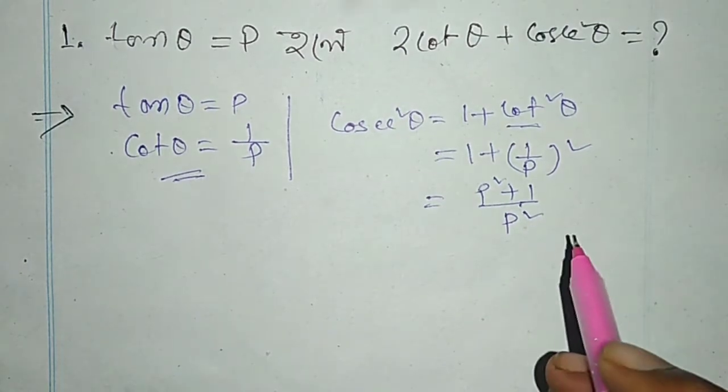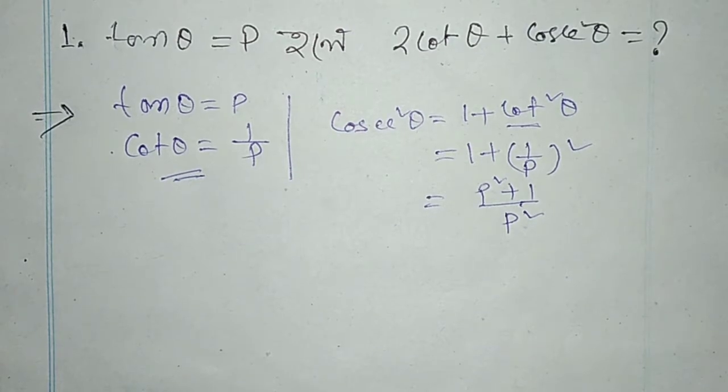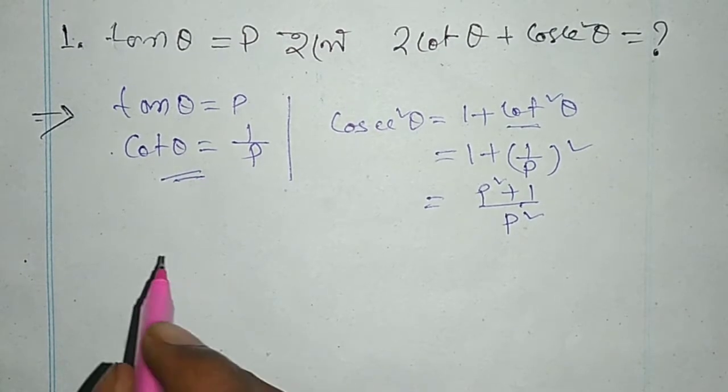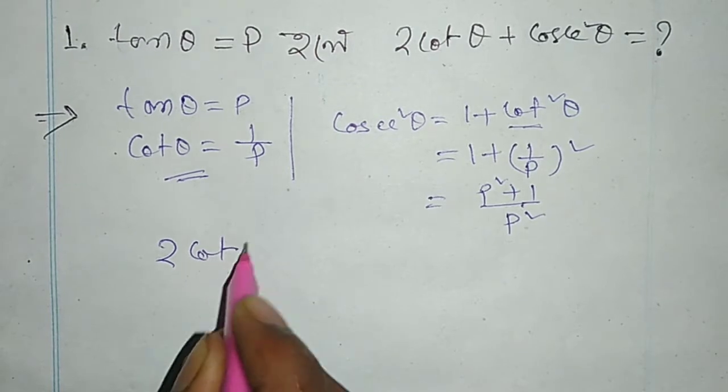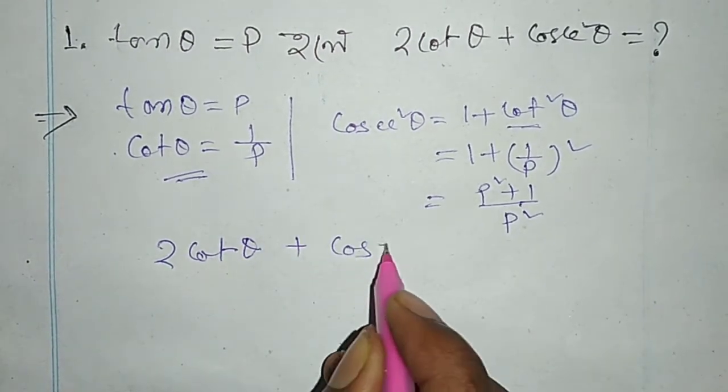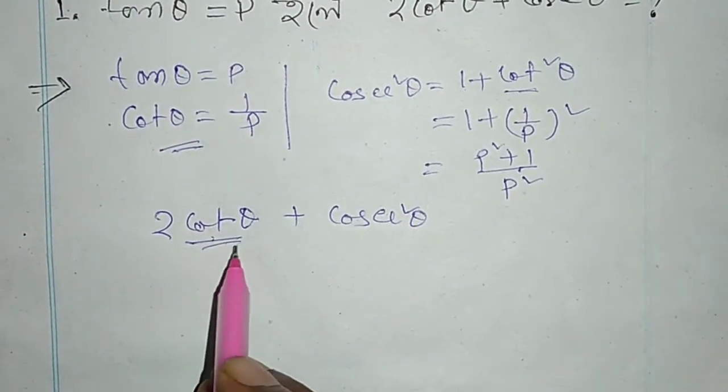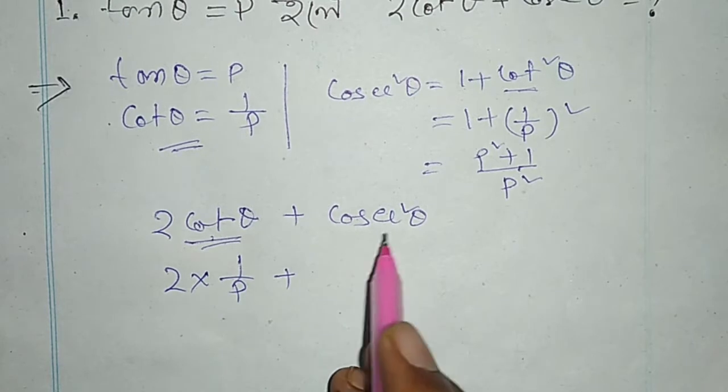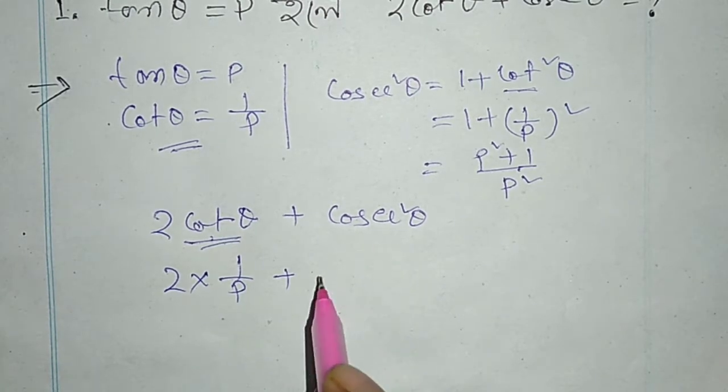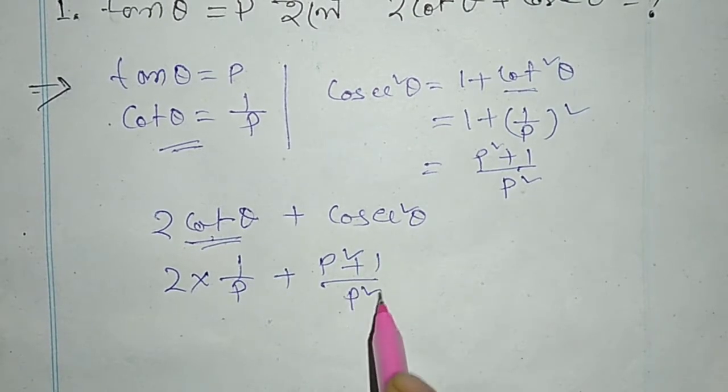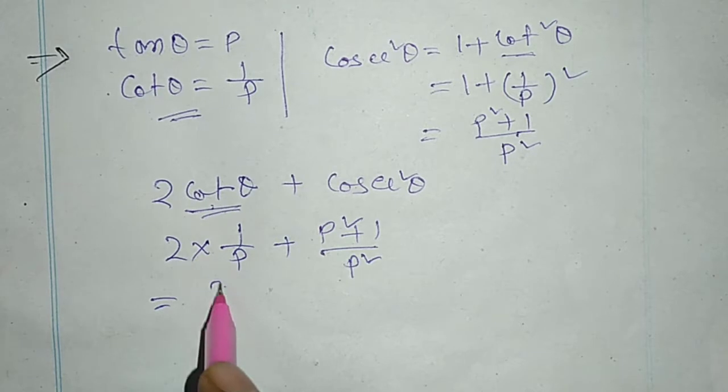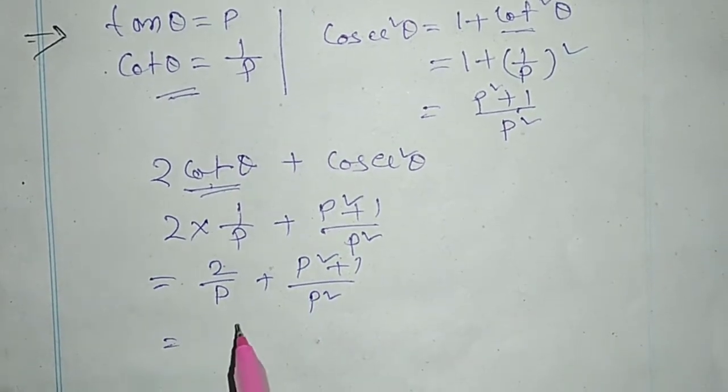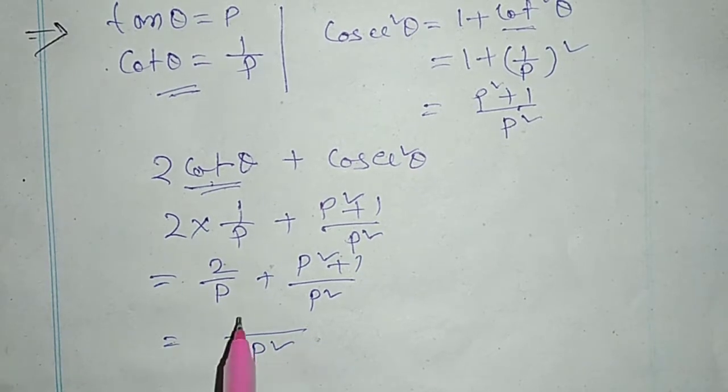cosec² θ. cot θ + cosec θ at the bottom, the 2 cot θ plus cosec θ. So I write 2 into 1 by p plus cosec θ or that p² plus 1 by p². The sum I'm going to get 2 by p plus p² plus 1 by p².